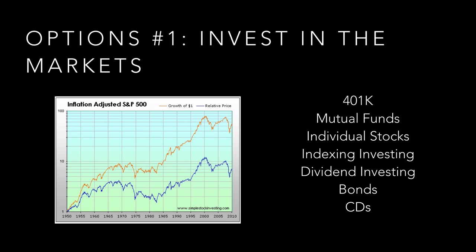So let's talk about the three options — remember, you are going to fall into one of these categories. Option number one is invest in the markets: 401k, mutual funds, buying individual stocks, swing trading, index investing like a fund that matches the S&P 500, dividend investing where you go after companies that consistently pay dividends, and bonds. CDs, in my opinion, don't even keep pace with inflation. The inflation-adjusted S&P 500 from 1950 to 2010 has earned about 8% over that time, but keep in mind that a lot of what you might read may not be adjusted for inflation.